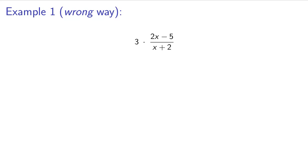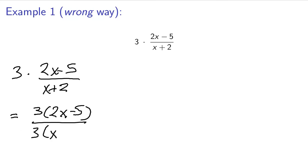I want to start out with the wrong way to do this. Now, this is the mistake that I commonly see. So when people have 3 times 2x minus 5 over x plus 2, the wrong way to do this would be to say, okay, this is the same thing as 3 times 2x minus 5 over 3 times x plus 2. This is what I see a lot, so this is a big no.